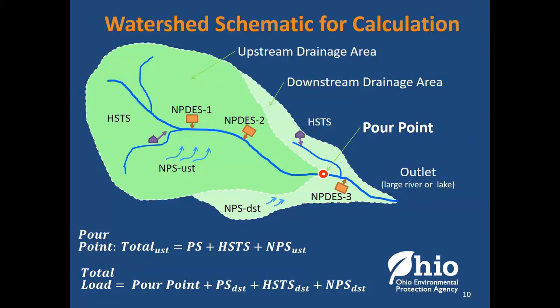That just gets us to the pour point, but we really want to know the whole watershed. In the Maumee, there are two very large wastewater treatment plants in Toledo downstream of the Waterville measurement point. The same is true in the Cuyahoga — one of Cleveland's large wastewater plants is downstream. For the area downstream of the pour point, we add up the point sources and home sewage treatment systems, and we apply the same unit area non-point source — the same pounds of phosphorus per acre — to all the acres downstream of the pour point.